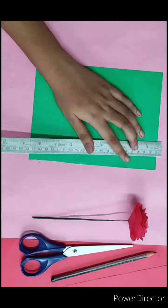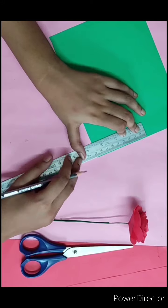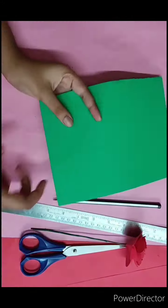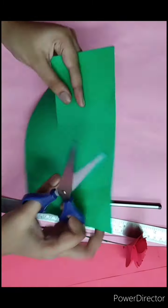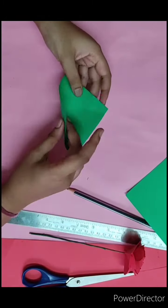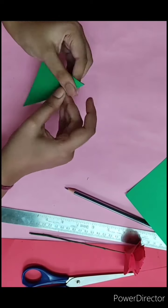Now we will make the green part of the flower. For that, we need a green sheet cut into a square, dimension 9 centimeter by 9 centimeter. Fold the paper.